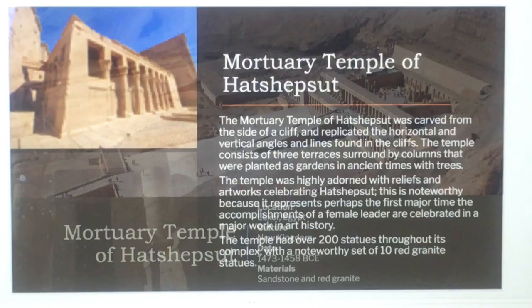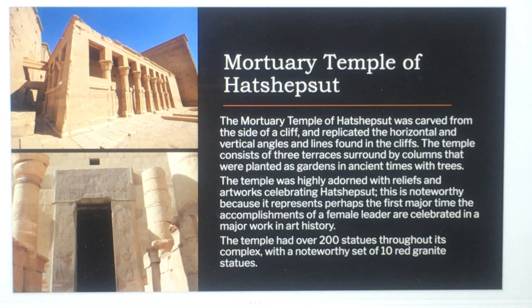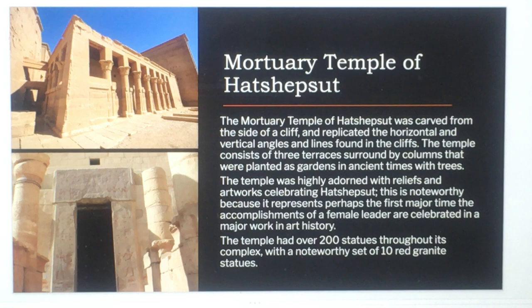The Mortuary Temple of Hatshepsut was carved from the side of a cliff and replicated the horizontal and vertical angles and lines found in the cliffs. The temple consists of three terraces surrounded by columns that were planted as gardens in ancient times with trees. The temple was highly adorned with reliefs and artwork celebrating Hatshepsut.